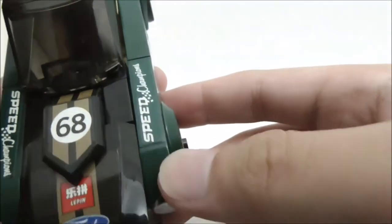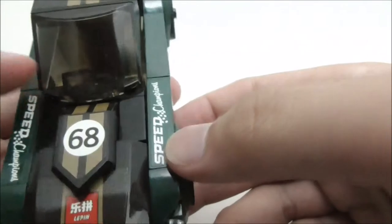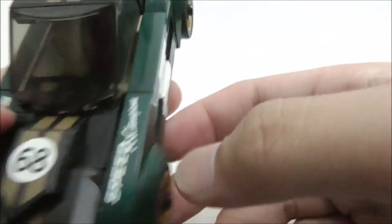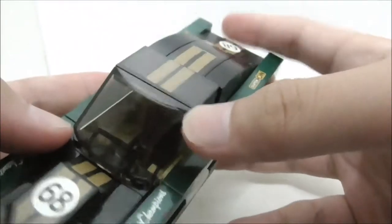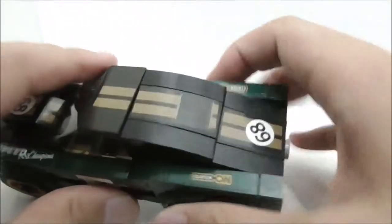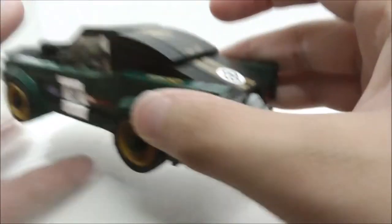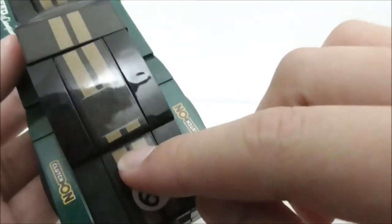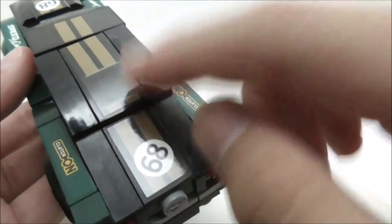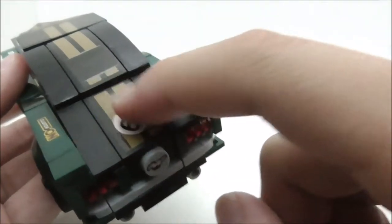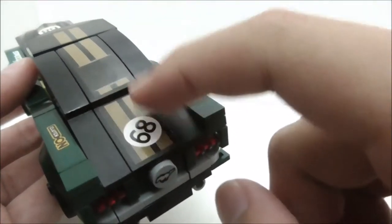Because Speed Champions is Lego's name, but yeah. So you have the windscreen right here. You have the gold stripe going on, and you have the windscreen for the back which is this. And you have this final part of the gold stripes which is this, with the 68 logo which is kind of turned around.